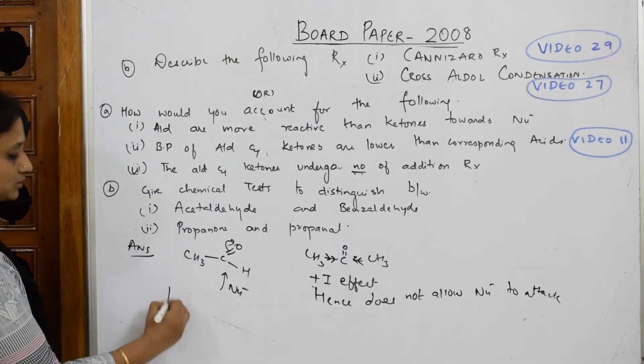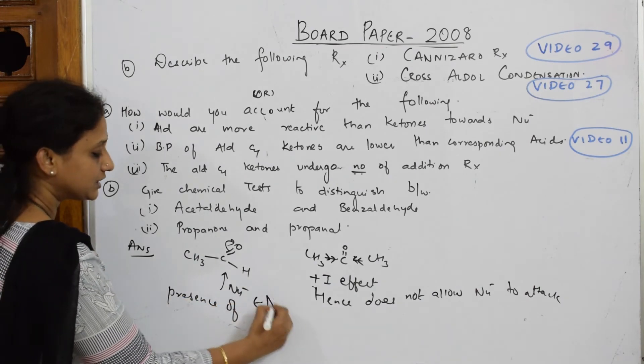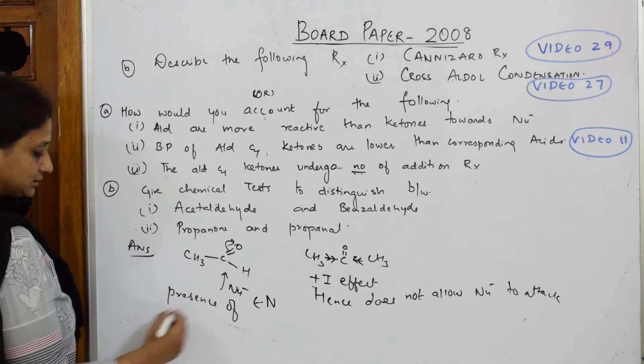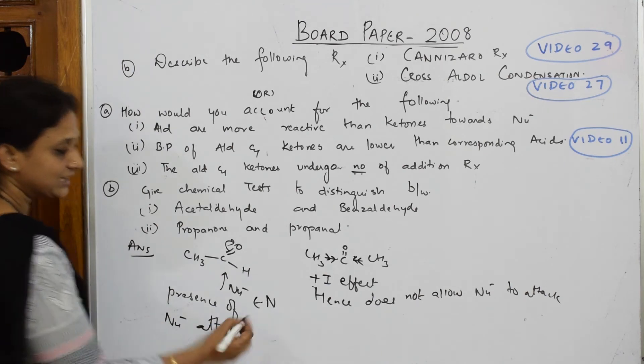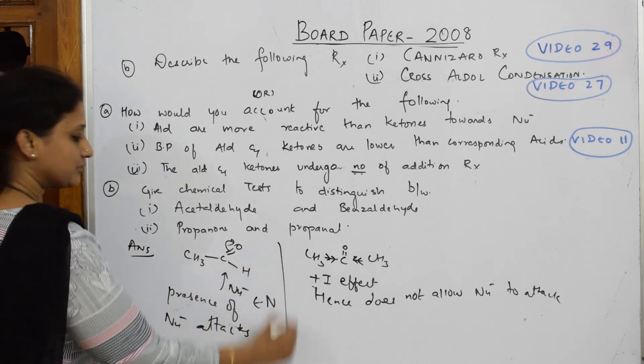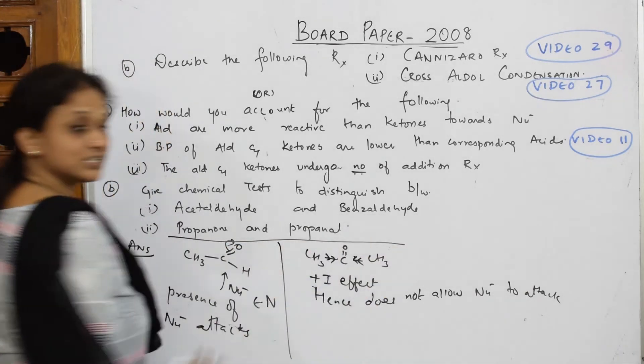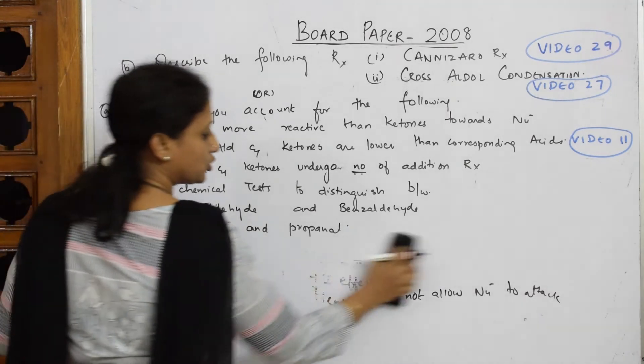You can write +I effect, hence does not allow nucleophile to attack. Here, presence of electronegative atom, hence nucleophile attacks. This is your reason you're going to write in one line. You can finish off your answer saying these are the reasons.